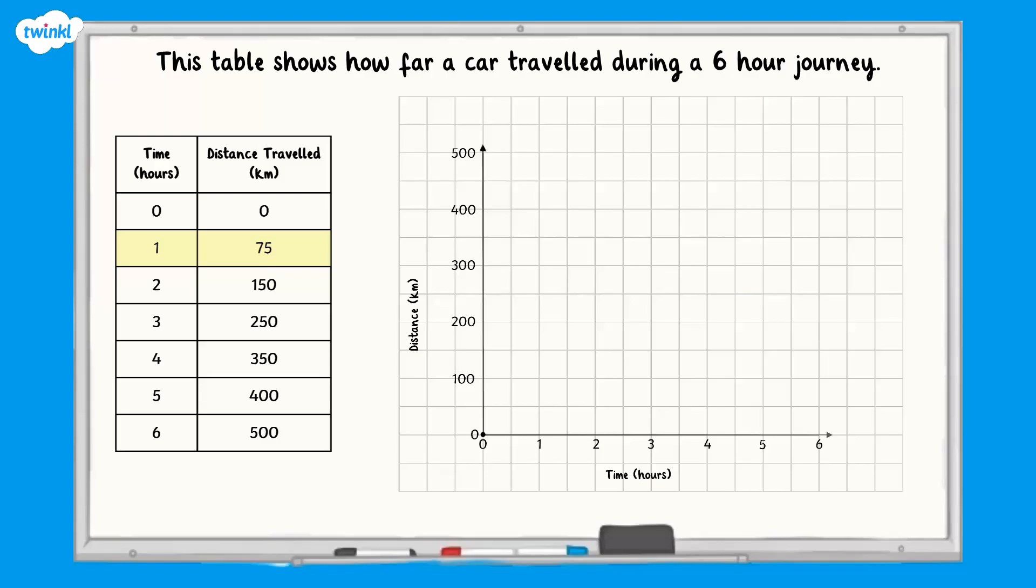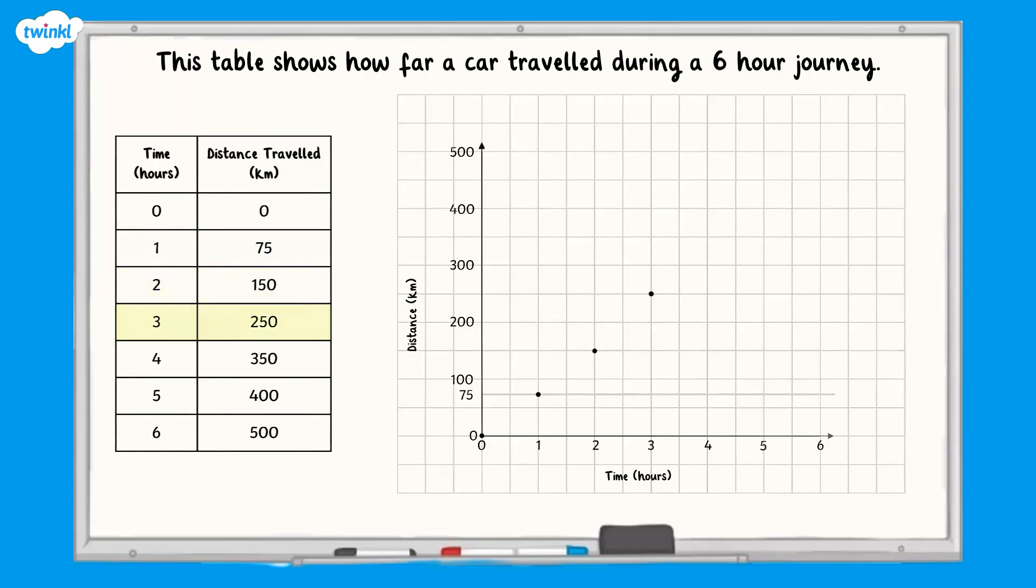75 is halfway between 50 and 100, so we'll need to go halfway between the horizontal lines representing those numbers. You might find it useful to draw the 75 kilometer line onto the graph lightly with a pencil. Then you can mark the point where the two lines cross.